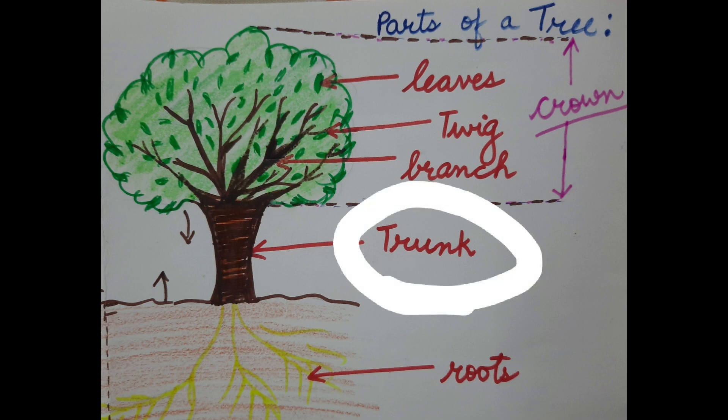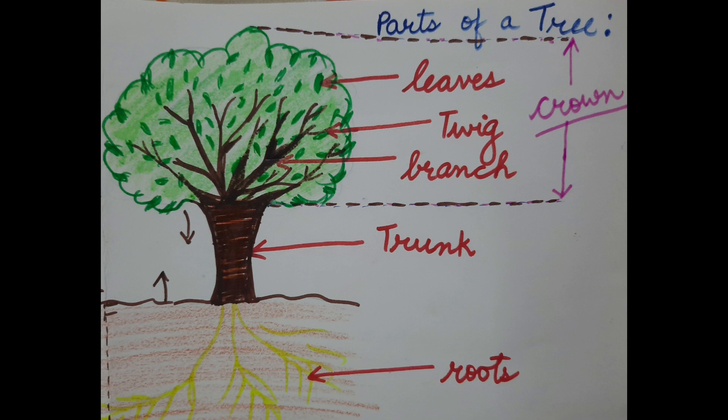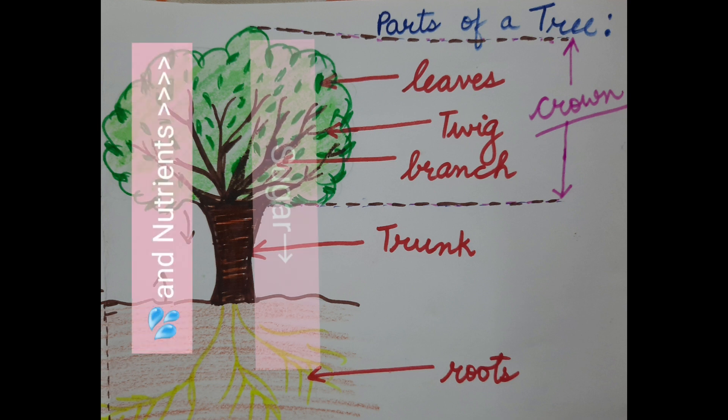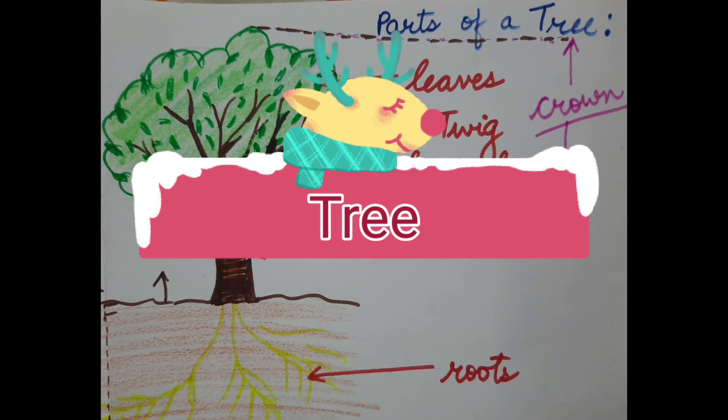Coming to the trunk. The trunk of the tree provides shape, support and holds up the crown. The trunk transports water and nutrients from the soil and sugar from the leaves to all the parts of the tree.